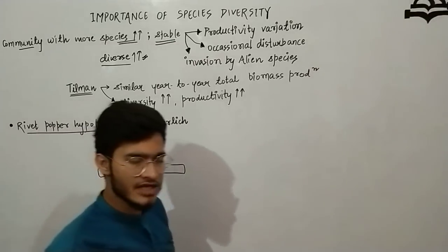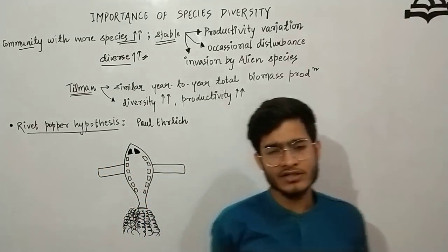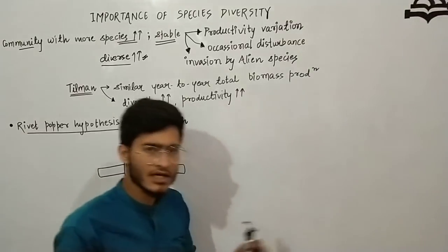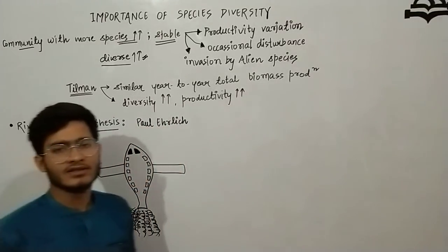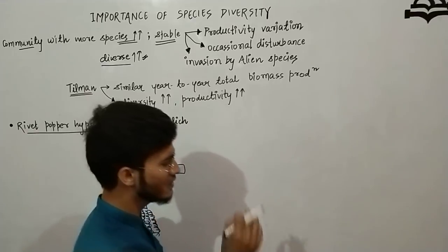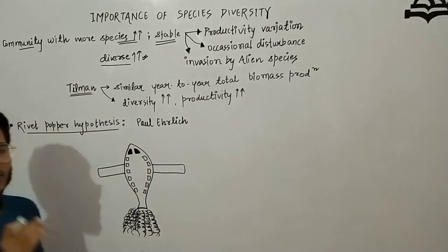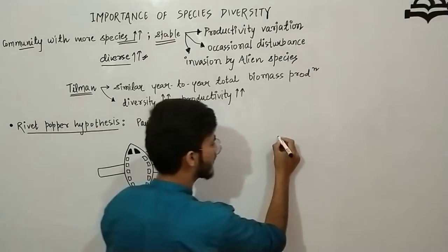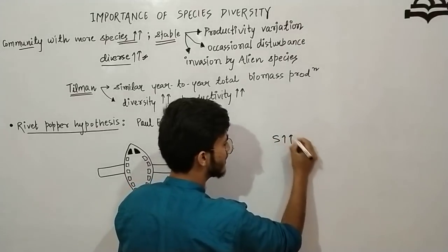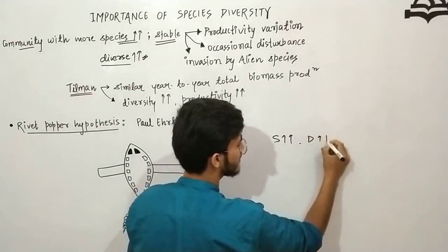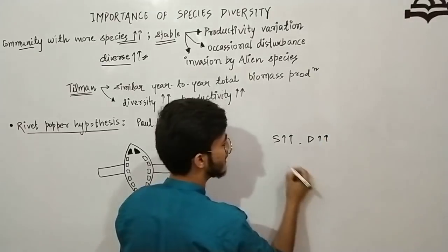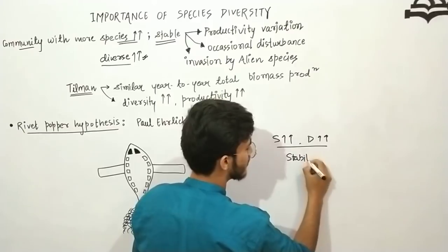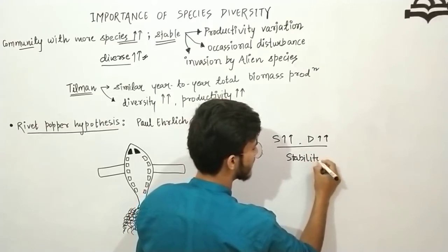The stability of a community or ecosystem in a particular area is directly dependent upon the number of species in that area. If the number of species is very high — that is, if our diversity is very high — it means that the stability there will be very high.